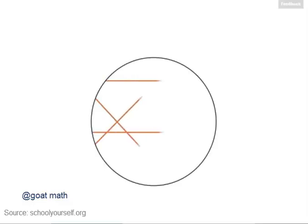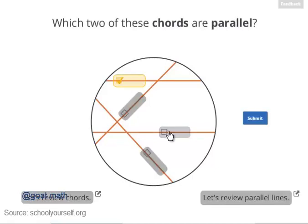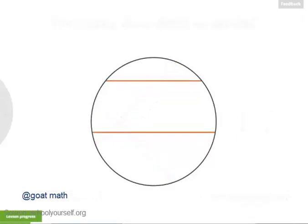Here's a circle, and let's draw a few chords inside of it. Which two of these chords are parallel? These two chords are parallel. If you extend them into lines, they run in the same direction and never intersect.